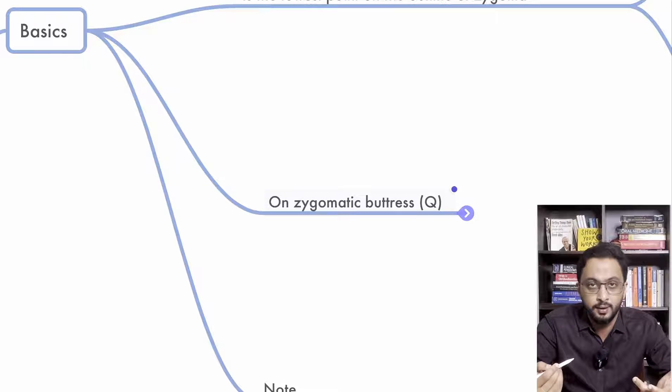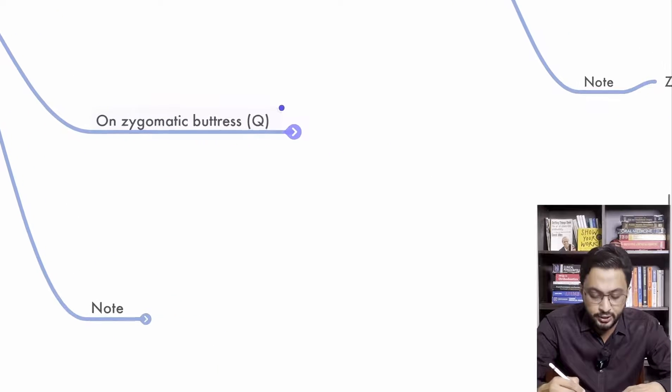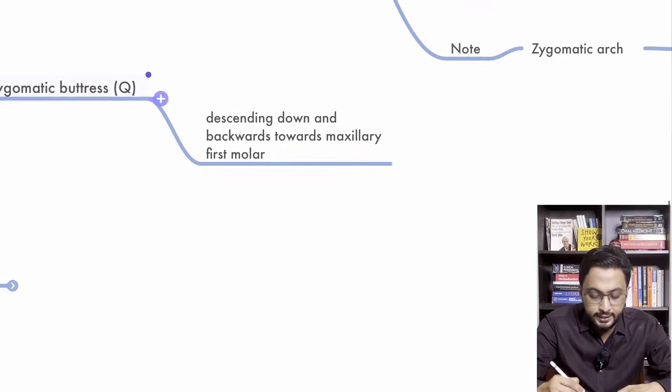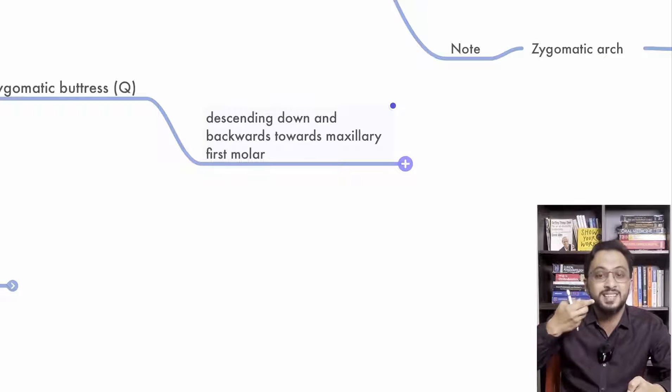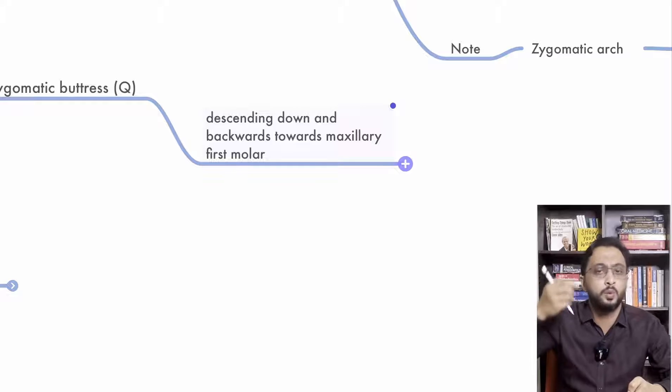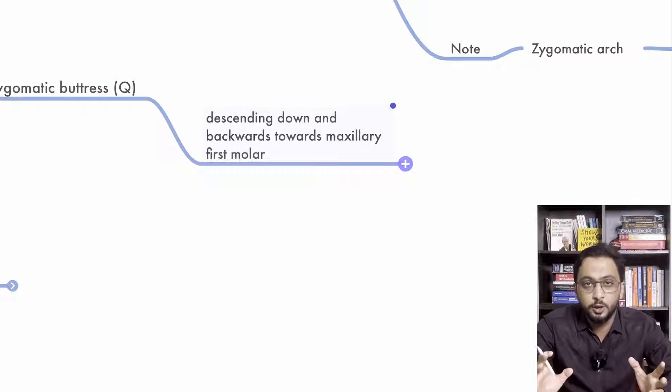Key Ridge is located where? Here. So it is located on the Zygomatic buttress. And it descends down and backward towards the maxillary first molar. So that is basically the Zygomatic buttress.